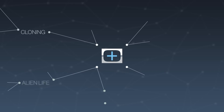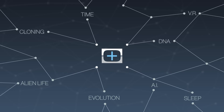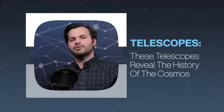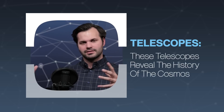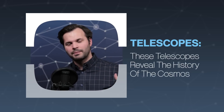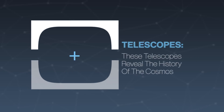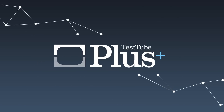Hey everyone, thanks for tuning in to Test Tube Plus today. I am Trace and this is episode 4 of 5 in our series all about telescopes — these light buckets that pick up energy from the universe and translate them into data that we can use to learn all about it. So far we've talked about how they work, who invented them, all the different types from radio all the way to gamma rays, and today we're going to talk about what those things have shown us.